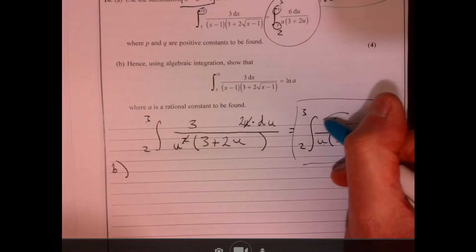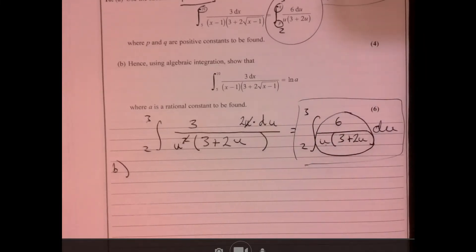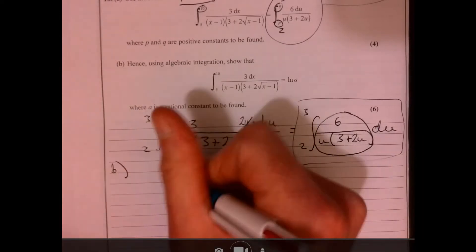And the key is partial fractions. You need to think about it a different way. Because at the moment, we cannot integrate that. It's very awkward.